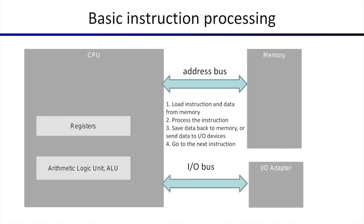Before we get into programming in assembly, let's understand how basic instruction processing works. This is a very general purpose model. We have a CPU and the CPU talks externally to memory. It also talks externally to IO adapters, but that is not what we will be dealing with today. The CPU talks over an address bus to memory. The CPU itself has the ability to process and compute through the arithmetic logical unit inside the CPU. The CPU keeps certain variables in registers — memory within the CPU — available at very fast speed to do computations.